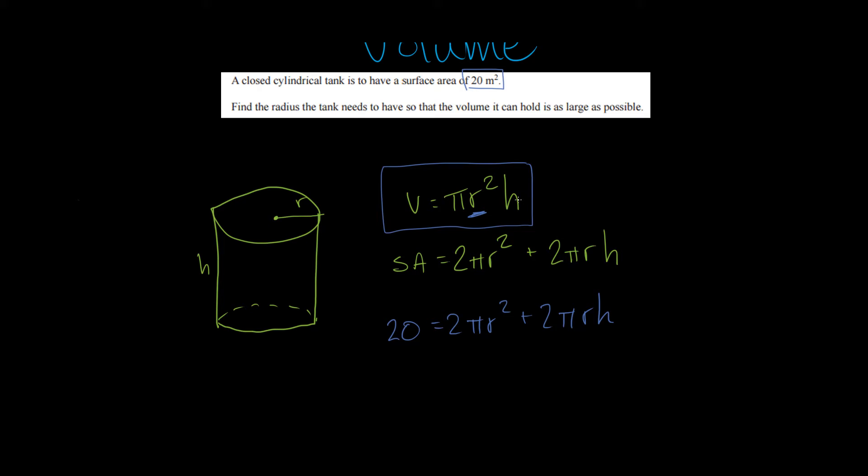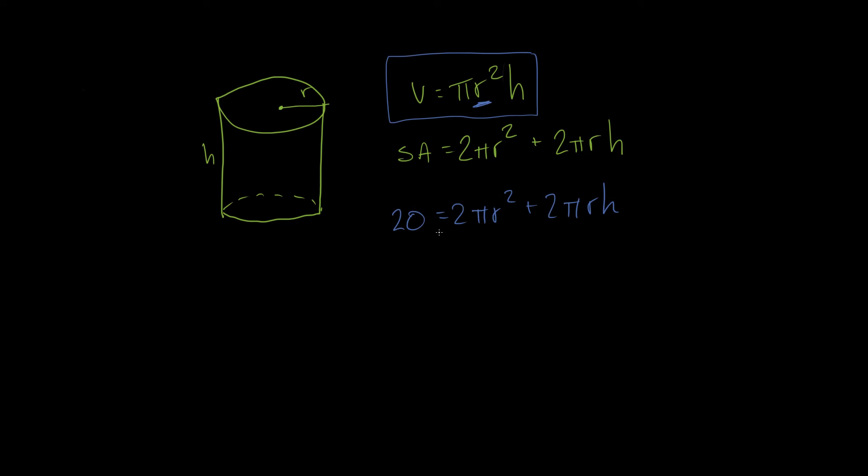So we're going to be using this equation right here, and we're going to be paying special attention to the radius. So what I'm going to try to do is I'm going to try to replace my height in this volume equation with a radius term. And in order to do that, I'm just going to solve for height in this equation right here and replace it in the volume. So let's do that. What I can do is divide all of these by 2, just to simplify some things. This is going to give me 10, and these are going to cancel out. So what I end up with is 10 is equal to pi r squared plus pi r h.